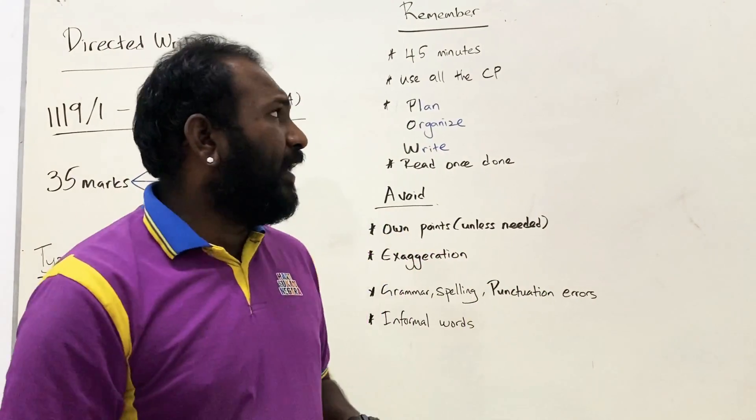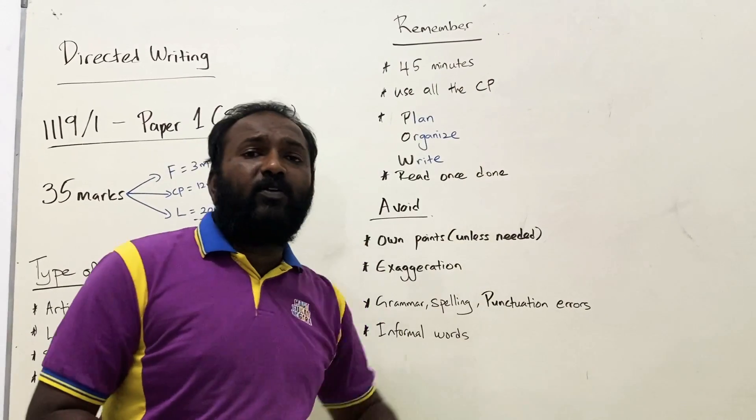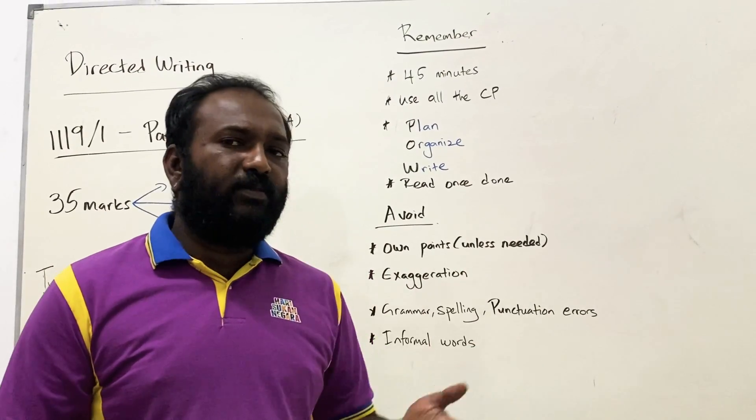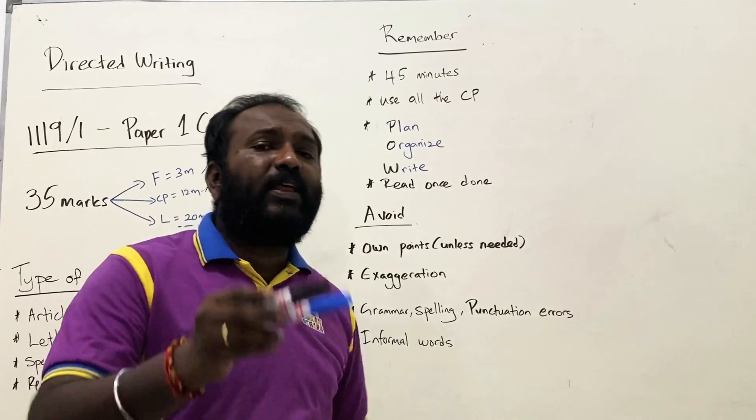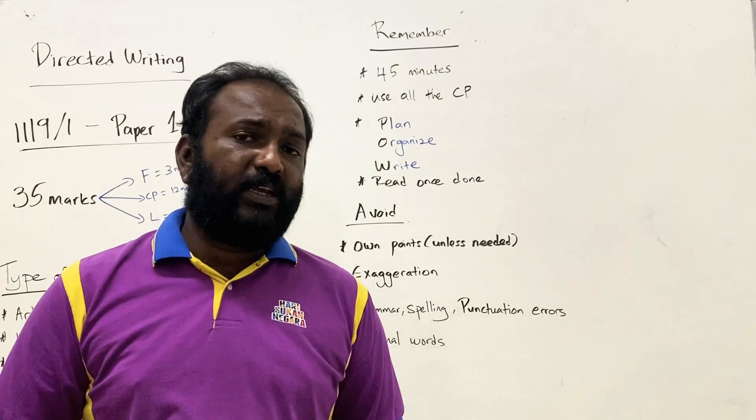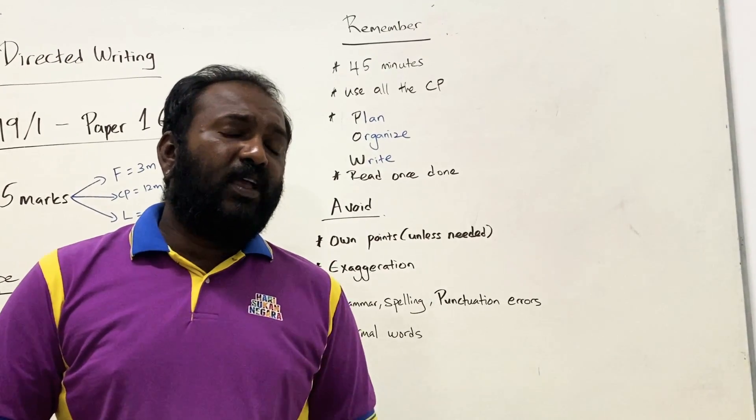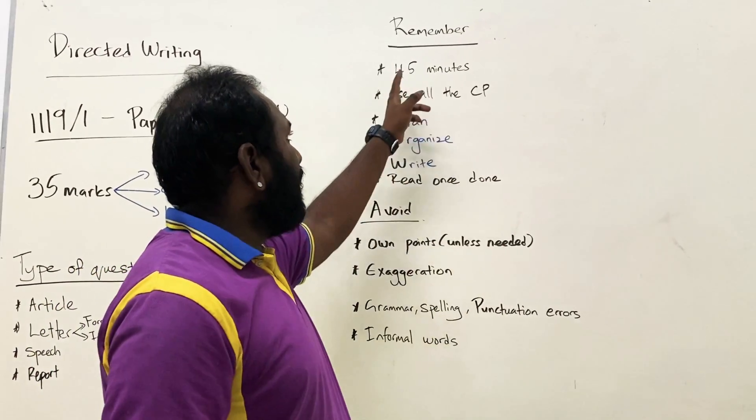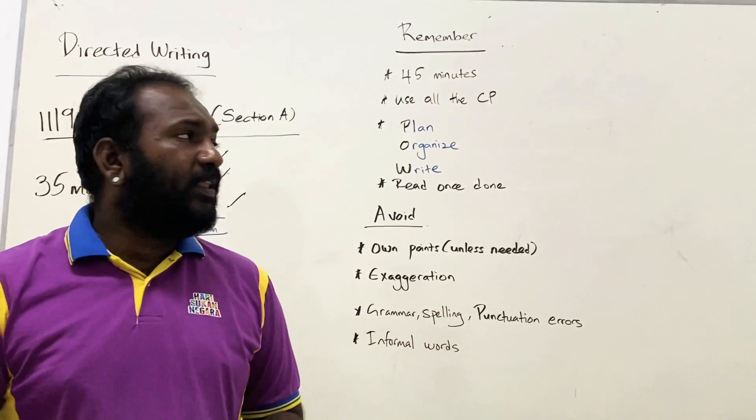While you are doing directed writing, there are a few things that you should keep in mind. Number one, make sure you do the essay within 45 minutes. Why am I giving you time restriction? Because I'm afraid if you use up more than 45 minutes for your directed writing, you won't have enough time to finish up your continuous writing. As you know, continuous writing requires you to write more and you need to use a lot of time.